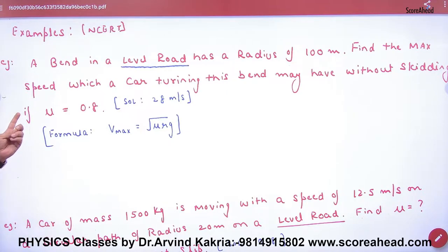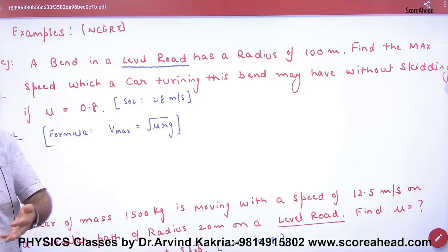First numerical, a bend in a level road. Is this a banking example? What is the level road? Level road is not a banking formula. Level road has a radius of r given. Find the speed which the car will move without skidding.